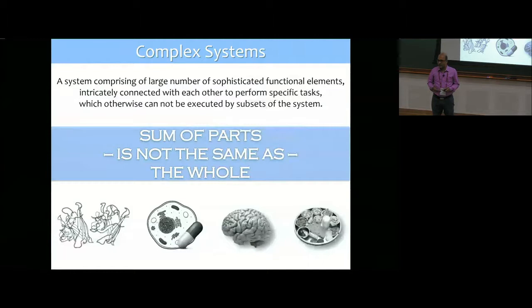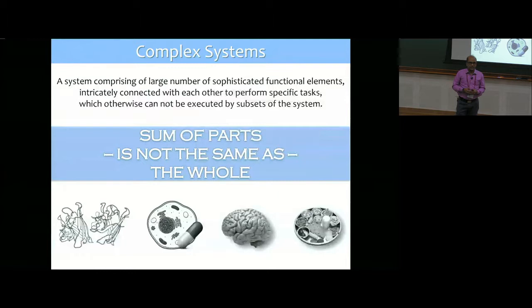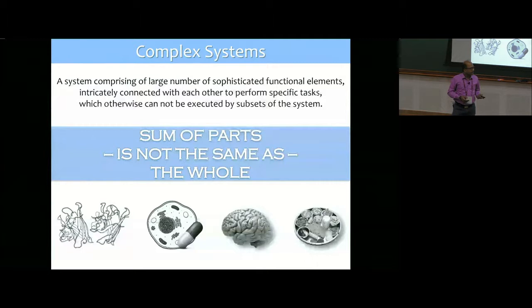We look at complex systems largely from the biological domain, starting from nano-level structures—that of protein structures—to micrometer-level molecular interactomes, all the way up to food. In a way, food is a complex system. I personally define complex systems as composed of a large number of discrete elements interacting with each other in a subtle manner, giving rise to emergent phenomena. The sum of the parts is not the same as the whole.